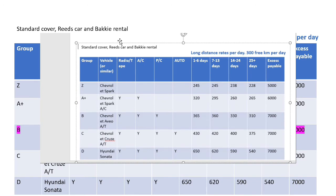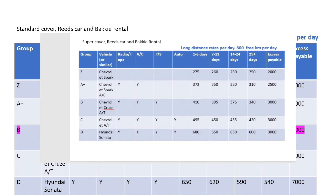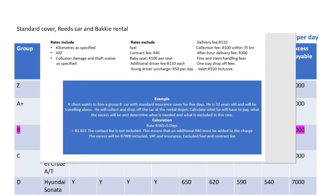We have different car rental options on two tables — we have the standard cover and the super cover. The difference between the standard and the super cover is the type of insurance you choose to take out. There is also additional information about what the rates include and what the rates exclude.